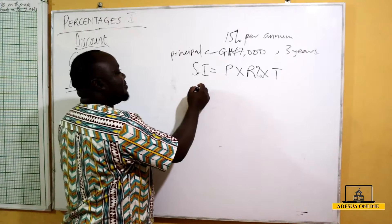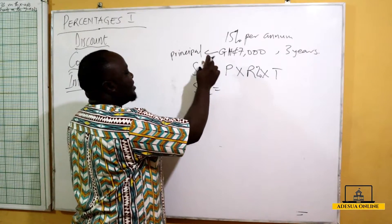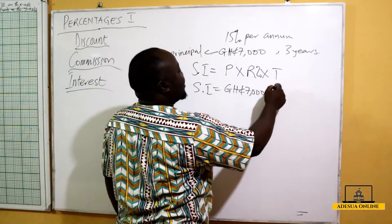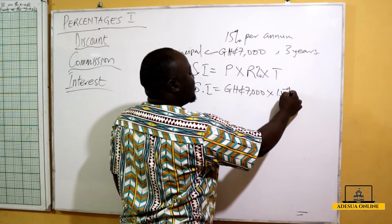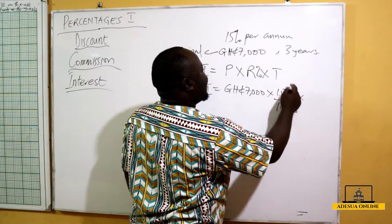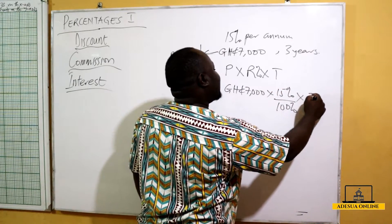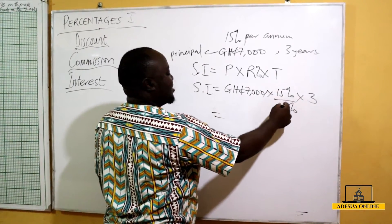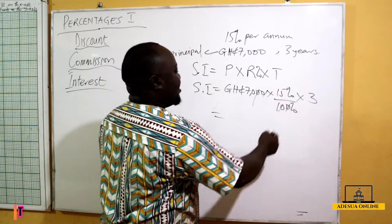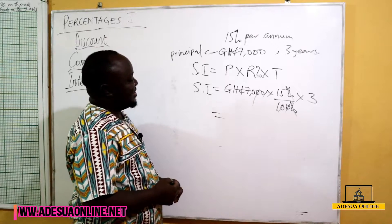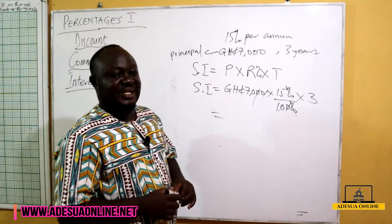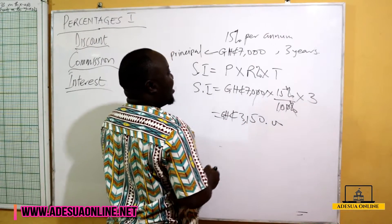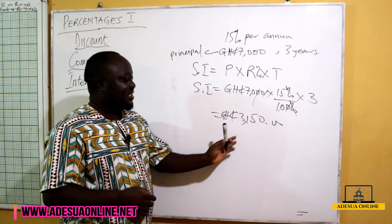So my Simple Interest equals the principal, which is 7,000 Ghana cedis, times the rate of 15 over 100, times the time of 3 years. The zeros cancel, giving us 70 times 3 times 15, which equals 3,150 Ghana cedis. That is the interest earned over three years.